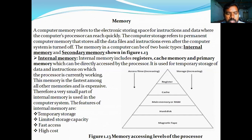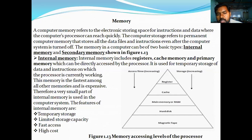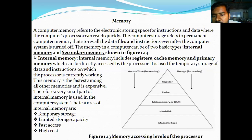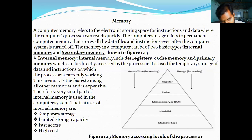Secondary memory is a storage device — hard disk memory is available. In internal memory, we use temporary storage. When the system is switched off, the data will be erased immediately. For direct access, we use register, cache memory, and primary memory. The processor can directly access cache memory and primary memory.